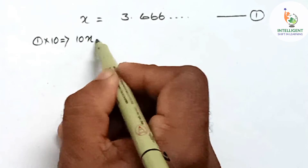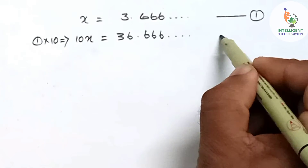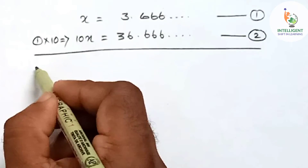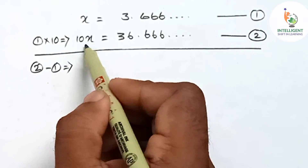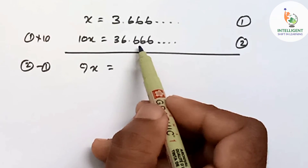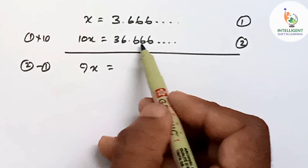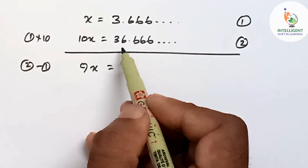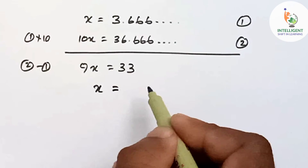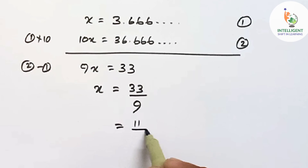So 10x is equal to 36.666... — equation number two. Equation two minus one: 10x minus x is 9x. On the RHS, 36.666... minus 3.666... — the decimal portion will get cancelled, and 36 minus 3 is 33. That is, x is equal to 33 by 9, which equals 11 by 3.